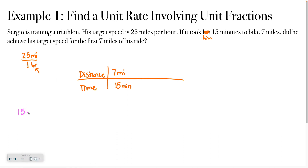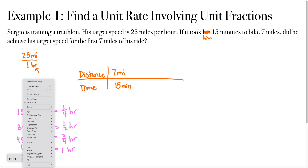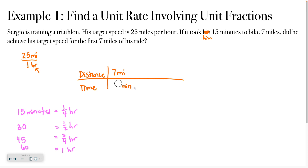15 minutes is one fourth of an hour. 15 minutes is one fourth of an hour because 30 minutes would be half an hour, 45 minutes would be three fourths of an hour, and 60 minutes is one full hour. So I'm going to erase the 15 minutes and rewrite it in terms of hours, because that's what I'm ultimately looking for. I'll replace the 15 minutes with one fourth of an hour.